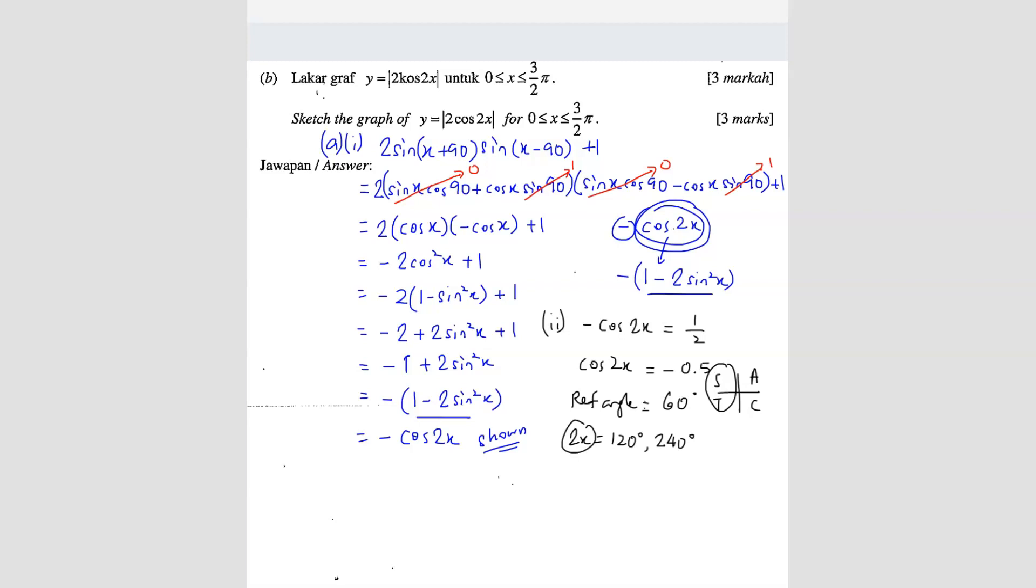But don't stop here because this is 2x. 2x means what? 2x means that there are two cycles. So 120 + 360 will give you 480. And 240 + 360, you get 600. So if you want to find for x, everything here must divide by 2. So you divide by 2, you get 60, 120, 240, and 300.